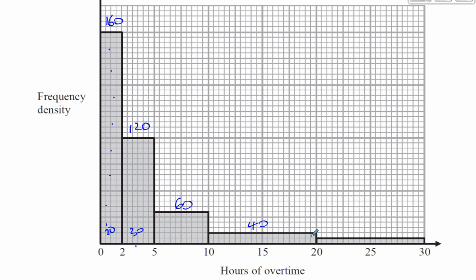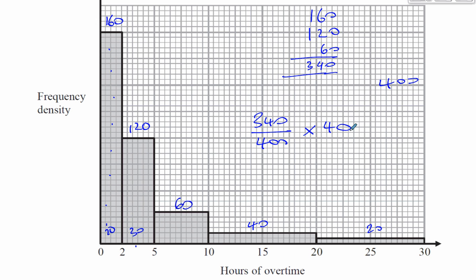The next bar goes from 10 to 20: there are 20 little squares times two, which is 40 squares. The bar from 20 to 30 has 20 little squares times one, which is 20 squares. So the first three bars total 160 plus 120 plus 60, which is 340 squares — those represent staff who claimed less than 10 hours overtime. Adding the remaining 60 gives 400 squares in total.